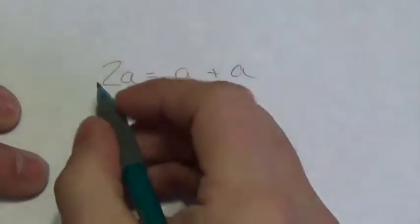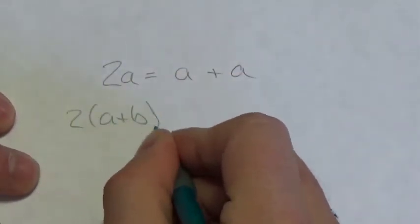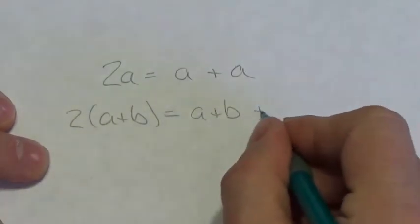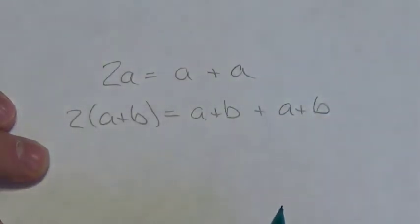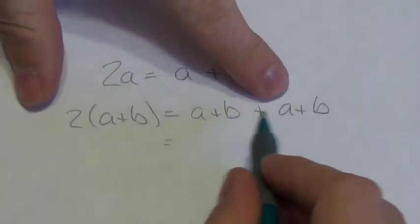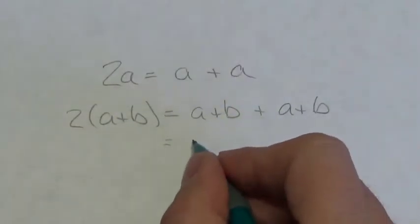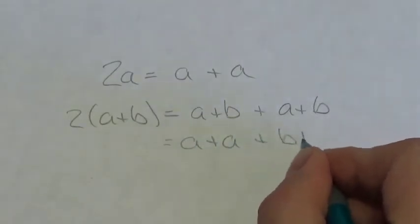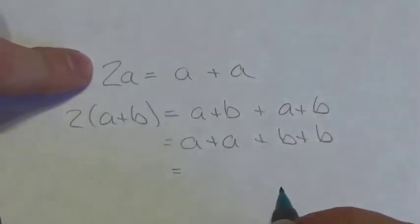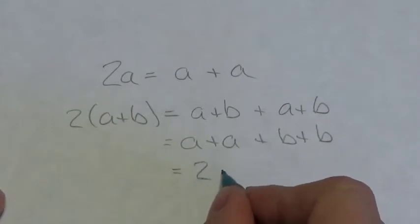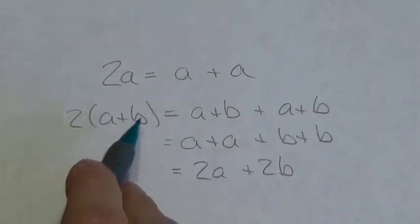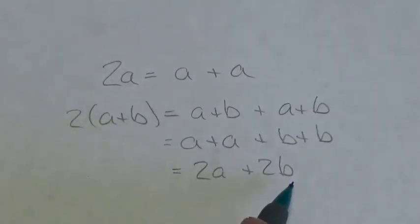And therefore, if I write 2 multiplied by A plus B, what that means is I've got an A plus B here and I'm going to add to that another A plus B. Now, thanks to the commutative law of addition, the order does not matter, so I can write that as A plus A plus B plus B. And then, because multiplication is a fast-track way of writing addition, this is going to be 2A plus 2B. So we see that 2 multiplied by A plus B is the same as 2A plus 2B.